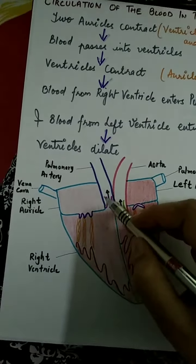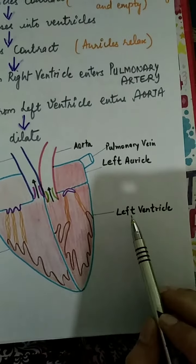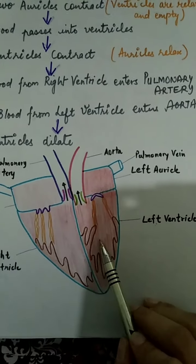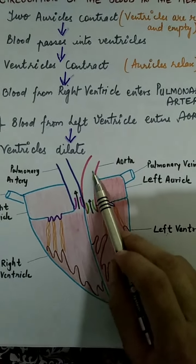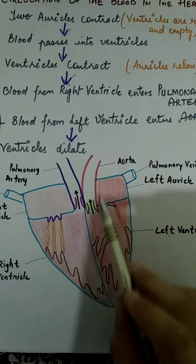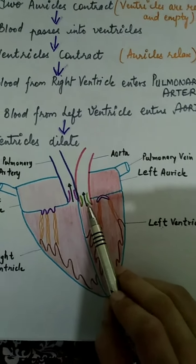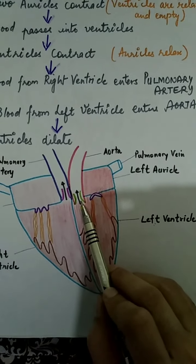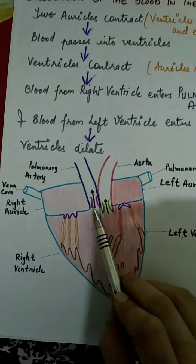Once the ventricles contract, blood from the right ventricle goes into the pulmonary artery — we have discussed that this blood will go to the lungs for oxygenation. Blood from the left ventricle goes into the aorta. The valves present here are the aortic semilunar valve and the pulmonary semilunar valve.